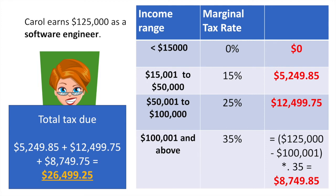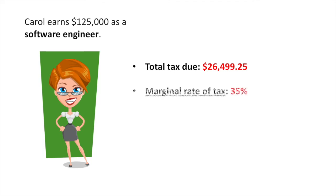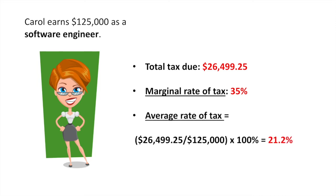But we're not finished yet. We also need to determine her marginal tax rate and average tax rate. The marginal tax rate is easy — it's equal to the highest tax percentage she pays, which is 35% in this case. Her average rate of tax is a little more complicated: we divide her total tax paid by her income, which equals approximately 21.2%.